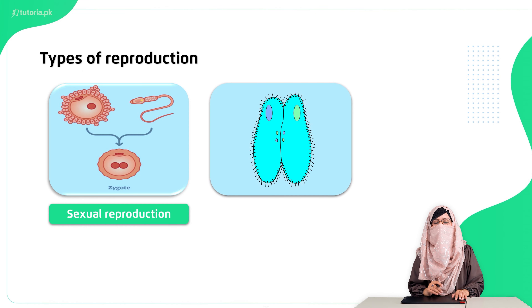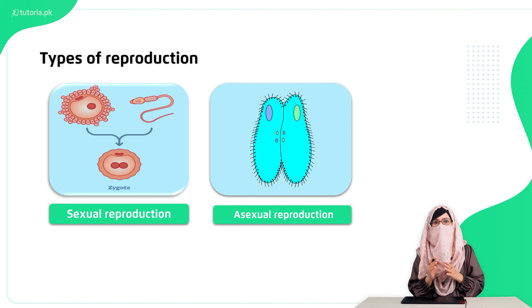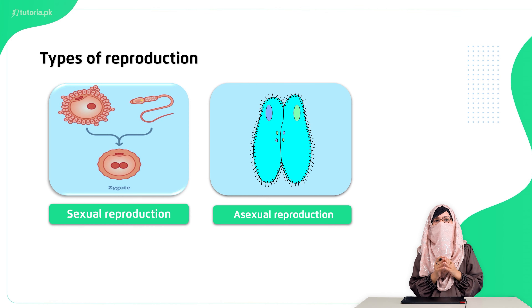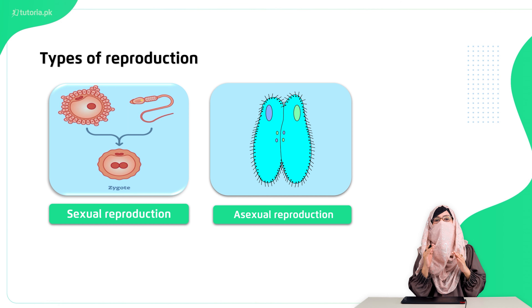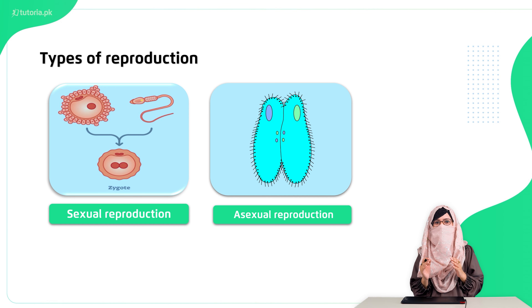The second one is asexual reproduction. Asexual reproduction is basically the reproduction in which an organism creates its identical copy, or creates its clone.